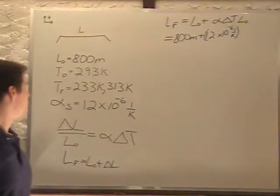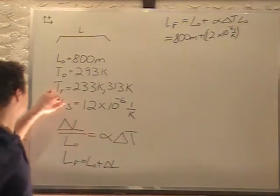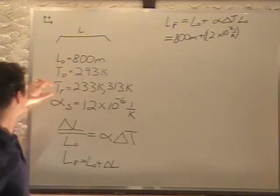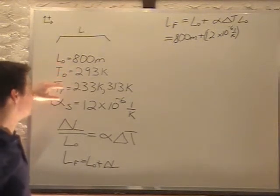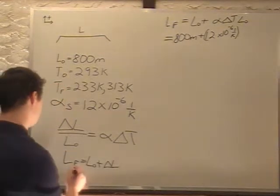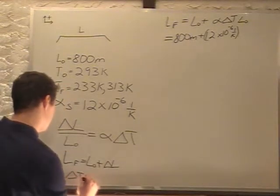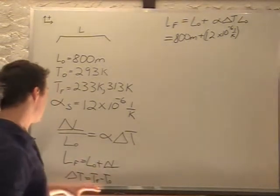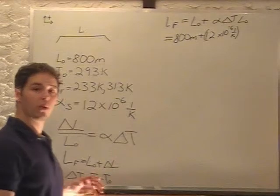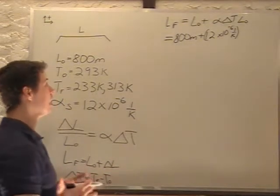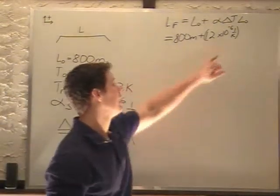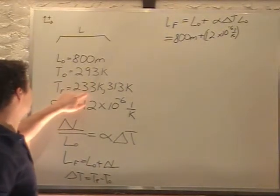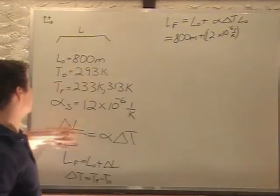Times our delta T, which is going to be, in this case, we have 293. Actually, it's going to be T final minus T initial. So that if our final is smaller, then we're going to get a negative number. So we have T final of 233 minus T initial of 293.